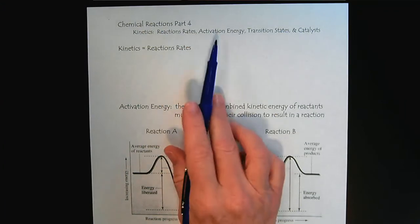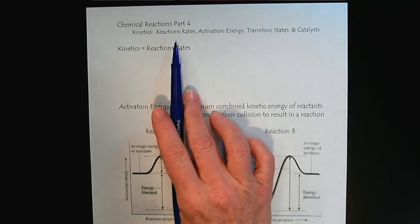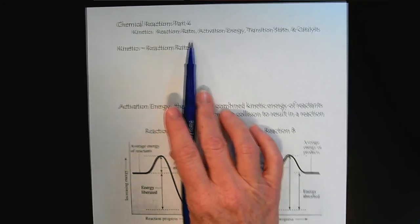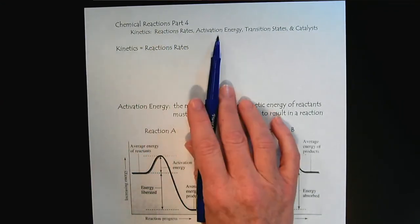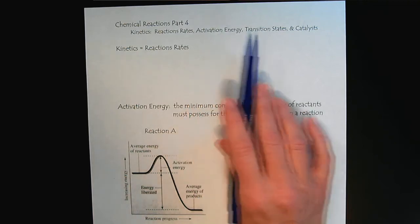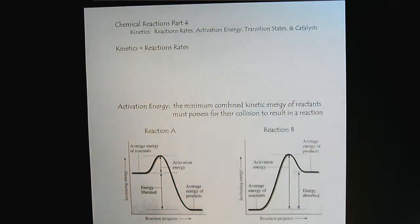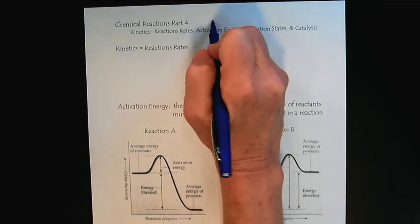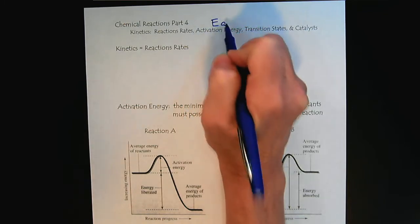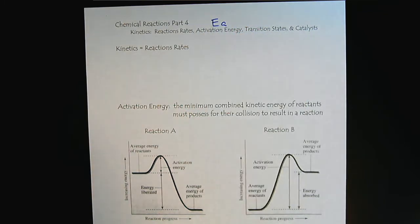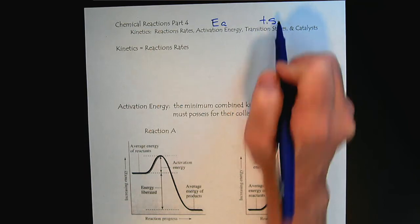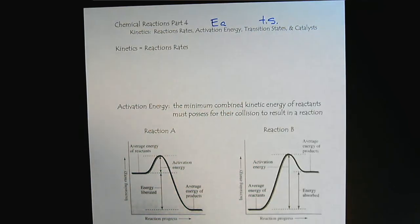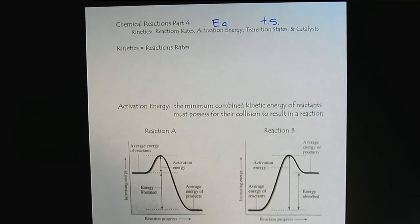We've already defined the term kinetics, so we'll look at reaction rates, activation energy, transition states, and catalysts. Activation energy we can symbolize as E sub A, and transition states will be symbolized with T.S.